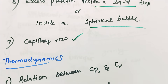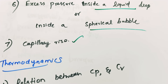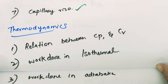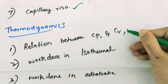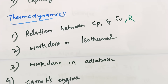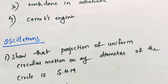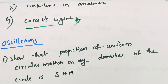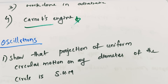The main derivation is the relationship between CP, CV, and R. The relationship between CP, CV, and R is important, as is work done in the isothermal process and work done in the adiabatic process. The Carnot engine diagram is also a derivation. There are many good topics here and a filter of what is very important.